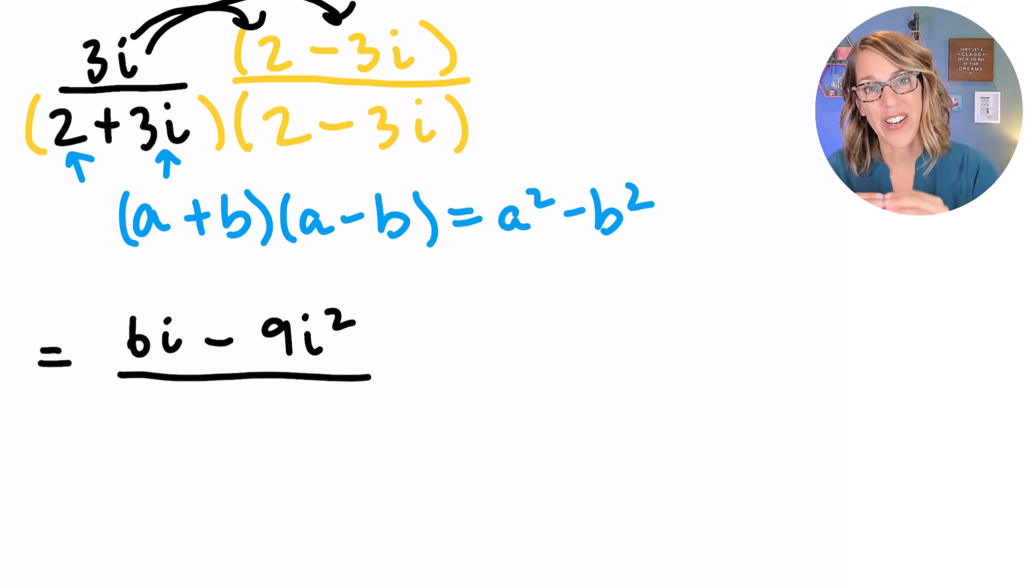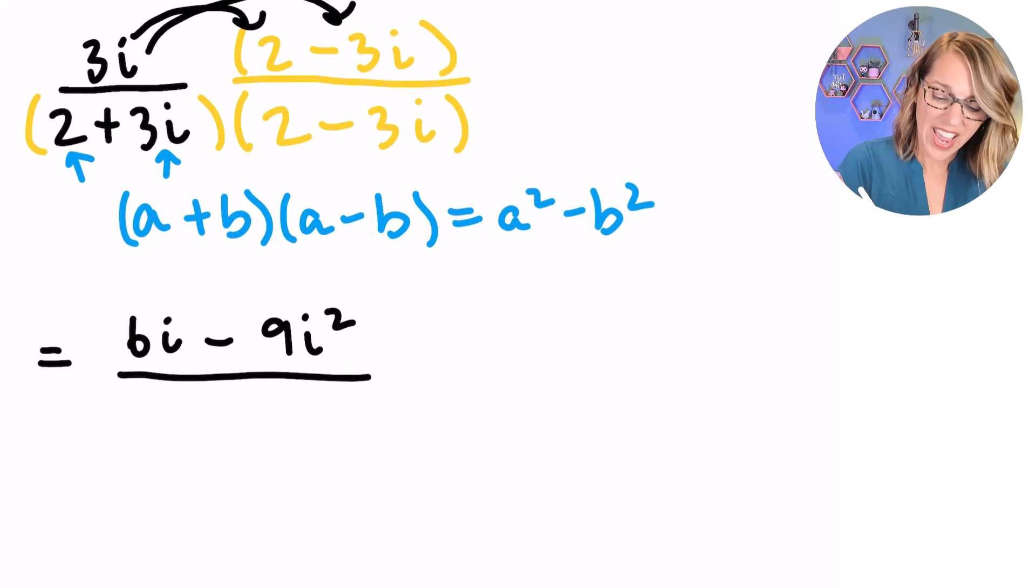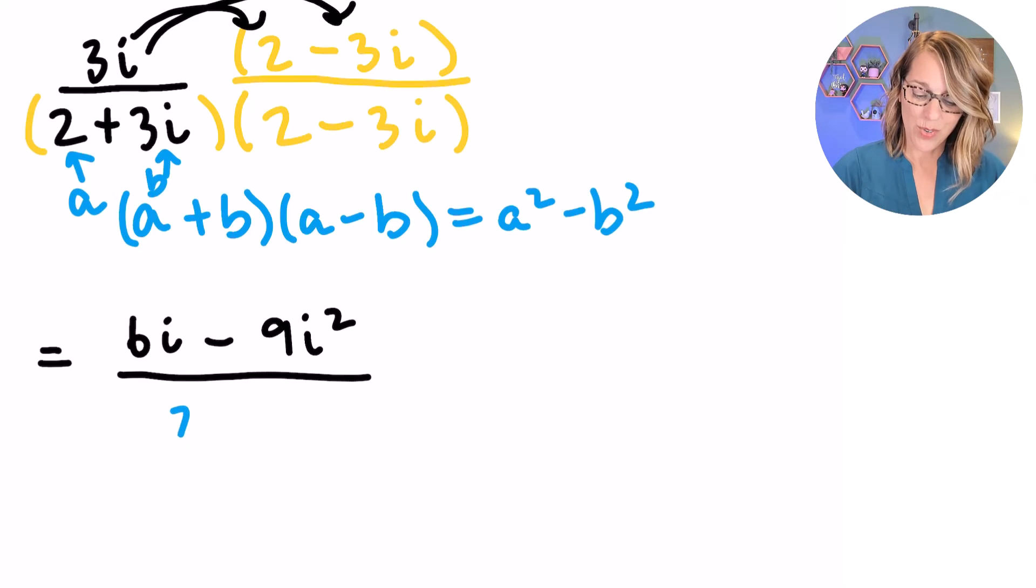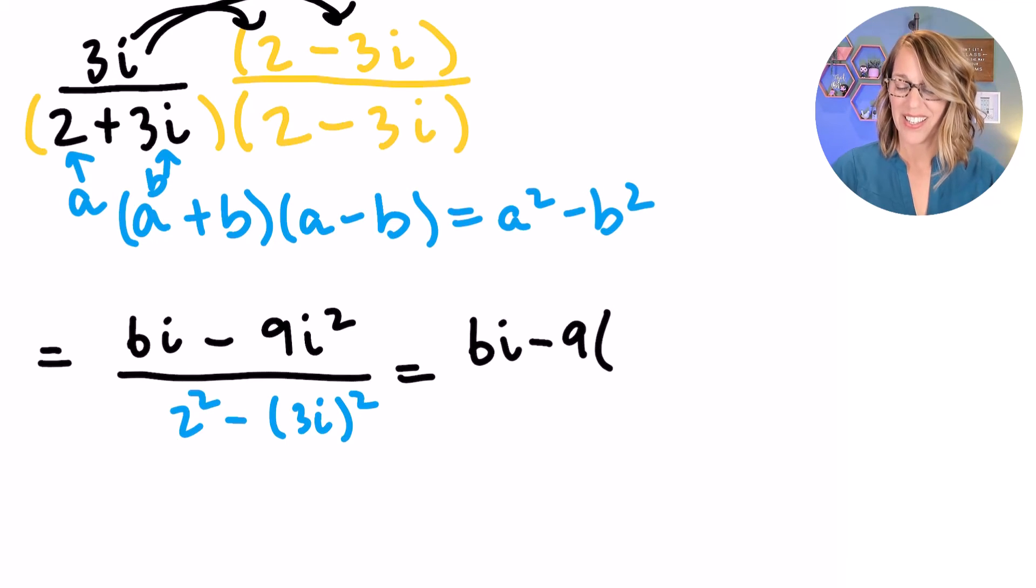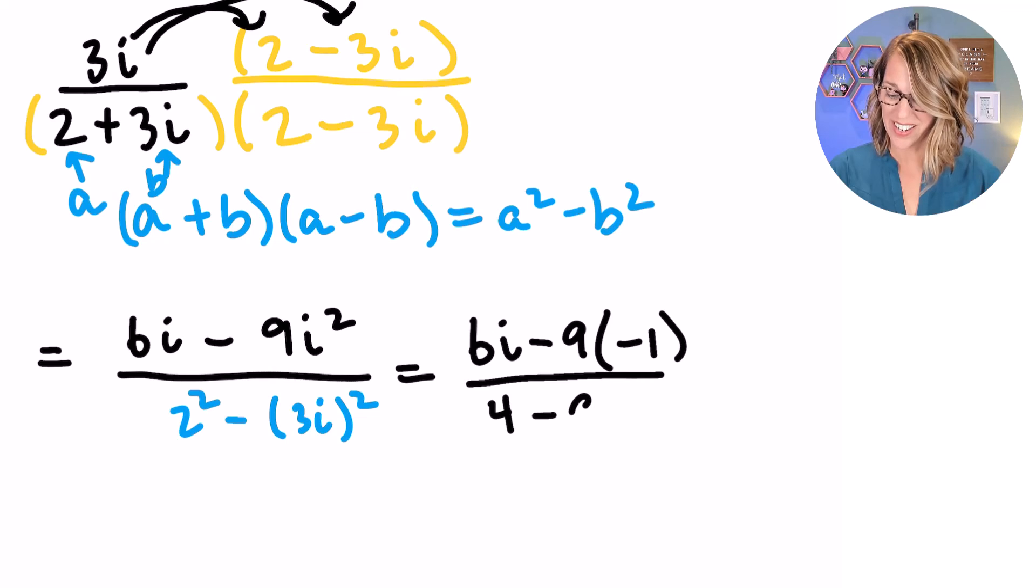For the denominator, I'm going to use that difference of squares. A is equal to 2, and B is equal to 3I. So I've got 2 squared minus 3I squared. Let's continue to clean this thing up. As I work this through, I've got 6I minus 9, but I squared is negative 1. In my denominator, 2 squared is 4 minus 3 squared is 9, and I've got an I squared here.